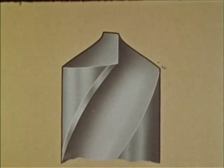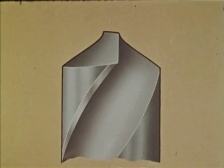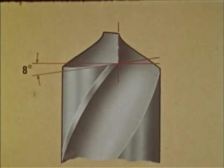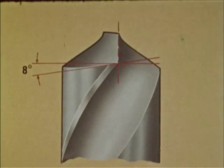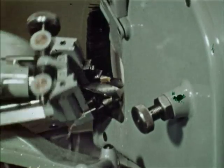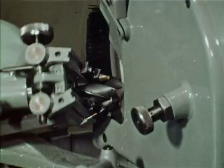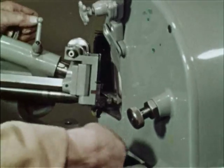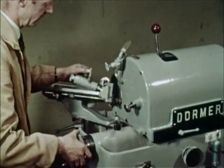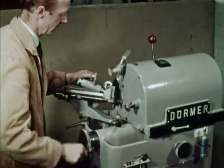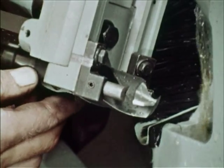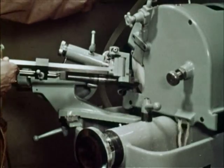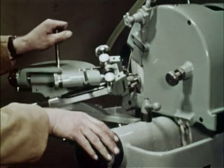To allow the drill to feed into the work, there must be sufficient clearance behind the cutting lips. Too little clearance will result in the drill rubbing without cutting, and too great a clearance will weaken the cutting edge with subsequent chipping and rapid breakdown. Correct clearance is provided on all Dormer drill sharpening machines. Each flank of the drill is ground from the same location point, therefore both flanks are identical.